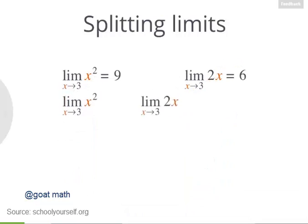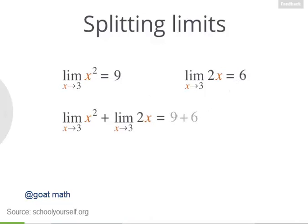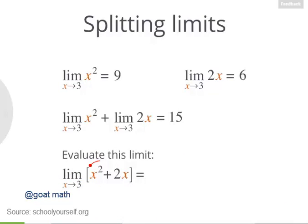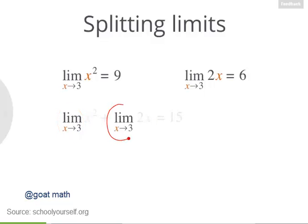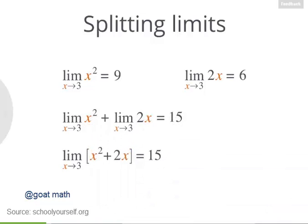Now if we were to add these two limits together, we'd have 9 plus 6, which equals 15. But what value do you get if the two functions, x squared and 2x, are added inside the limit? In other words, as x gets very, very close to 3, what value does x squared plus 2x approach? This limit equals 15. So the limit of the sum of these two functions equals the sum of the limits of the two functions. When you're adding two limits that approach the same x coordinate, you can combine them.